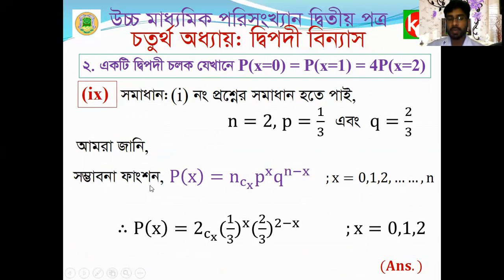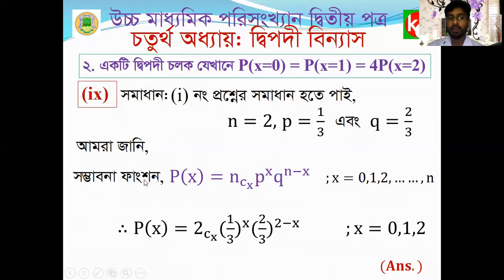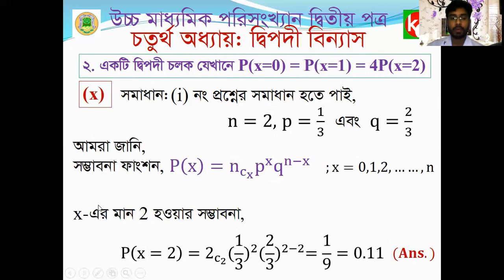The probability of X equal to x is nCx * p^x * q^(n-x), for x = 0, 1, 2, ..., n. With n, p, and q determined: q equals 2/3, p equals 1/3, we apply the binomial distribution function.